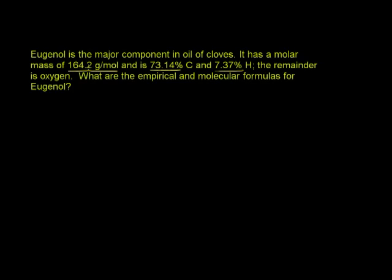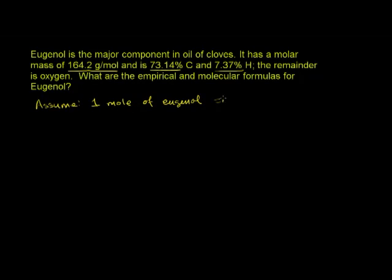The first piece of information given is that the molar mass of eugenol is 164.2 grams per mole. To simplify things, let's assume we have one mole of eugenol. A mole is just a huge number — like saying we have a million molecules of eugenol, but even bigger. Since we have one mole, that gives us a mass of 164.2 grams.